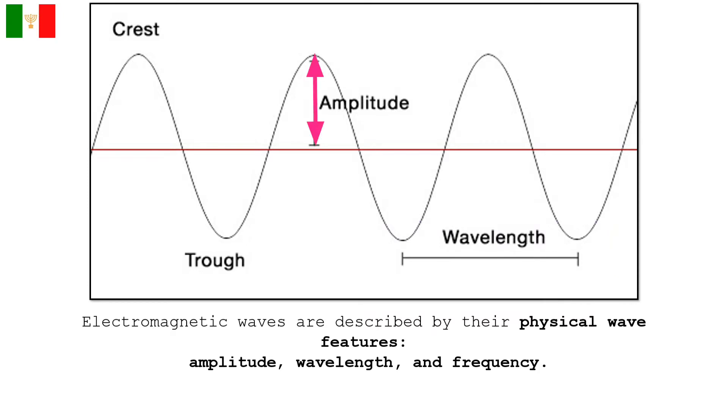The last one is amplitude. In physics, the maximum displacement or distance moved by a point on a vibrating body or wave measured from its equilibrium position. It is equal to one-half the length of the vibration path. Or in other words, this is the height of the wave.